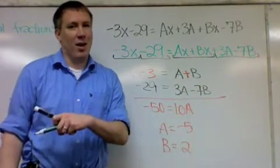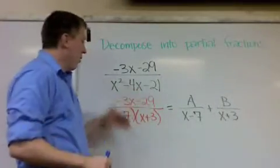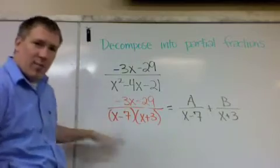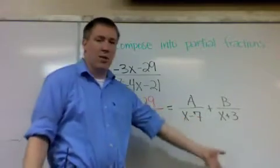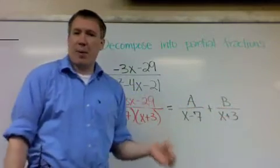So let's go back and plug those in. Going back to where we started, we factored the bottom. And then we split it into two fractions with this A and B, which we solved for. A was negative 5, b was 2.